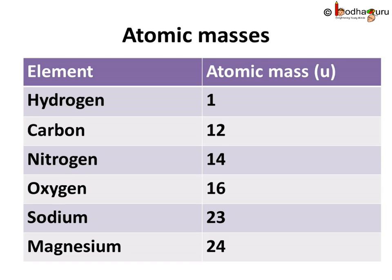Hydrogen, its atomic mass is 1U. Carbon, it is equal to 12U. Nitrogen, 14U. Oxygen, 16U. Sodium, 23U. And magnesium, 24U.